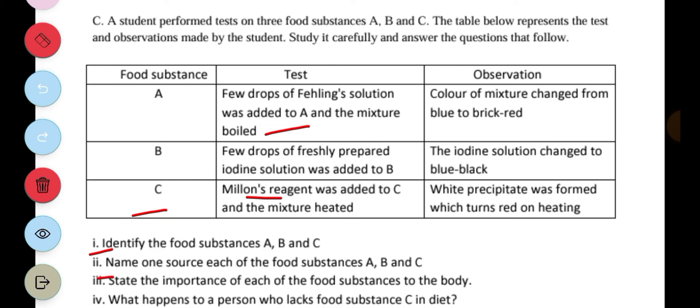Part II says, name one source each of the food substances A, B, and C. For A, one source is banana which is for reducing sugar. For B, which is starch, it is cassava. And C, which is protein, it is fish.